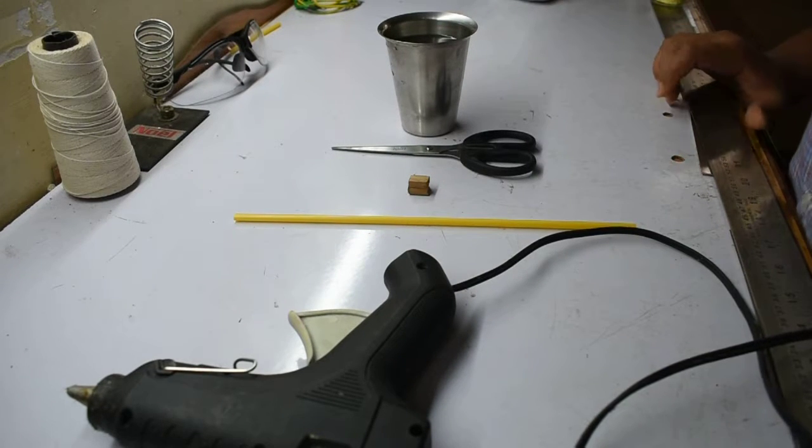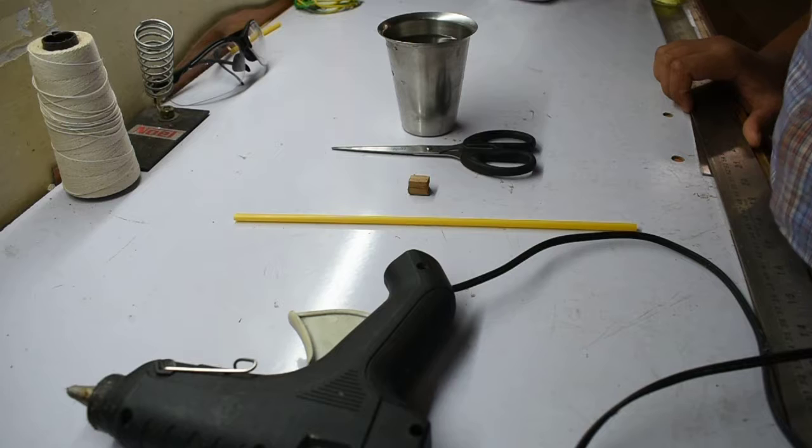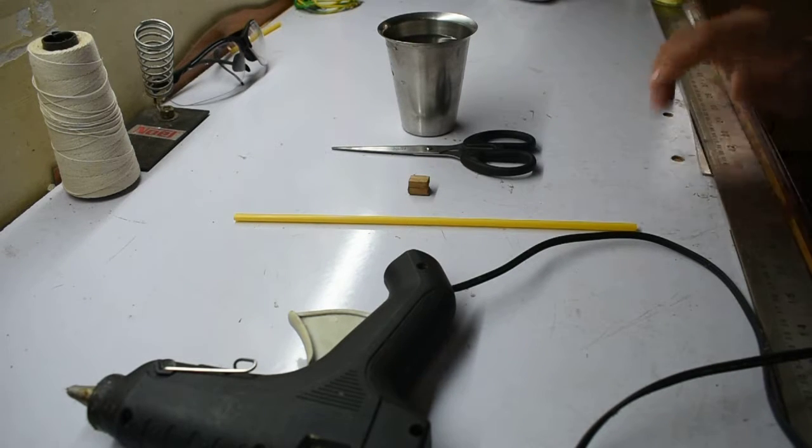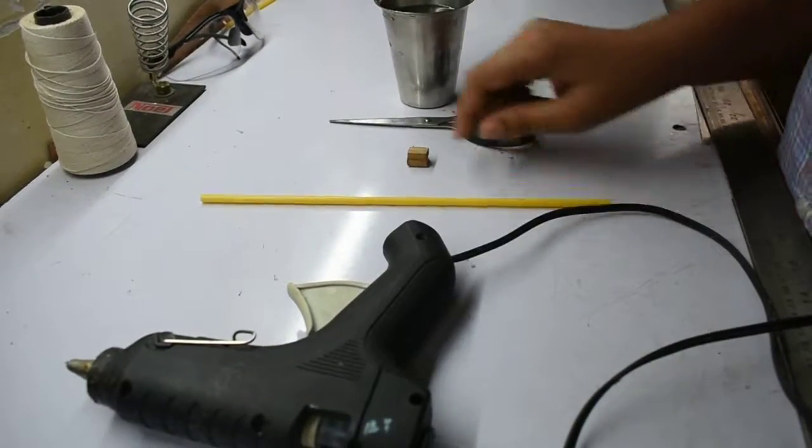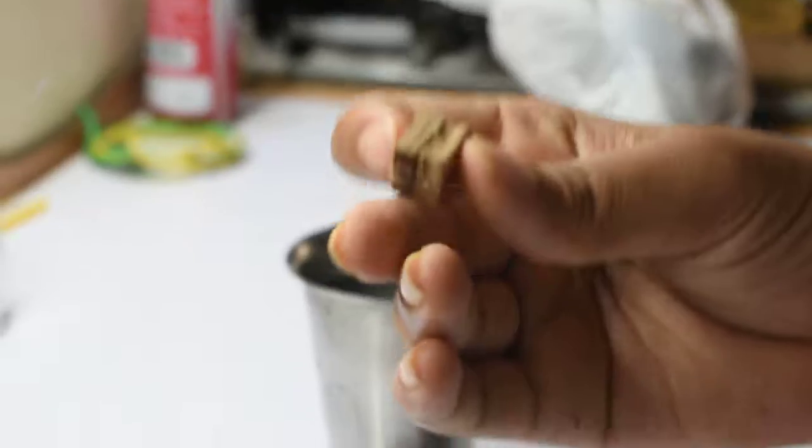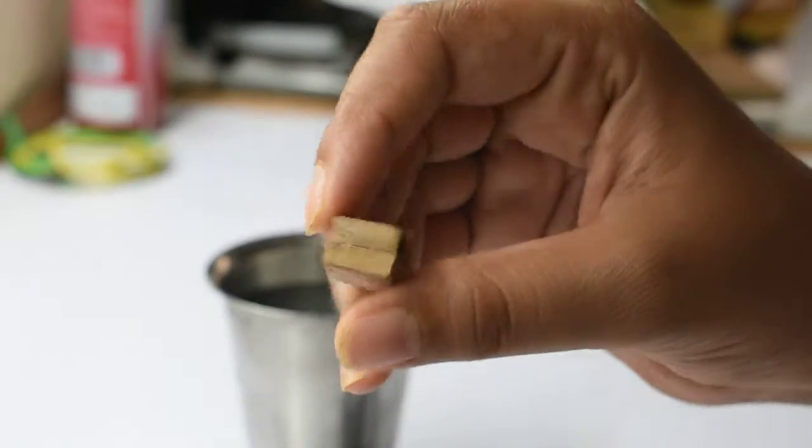Hello friends, in today's video we'll show you how to make a mini water sprinkler using straws. The requirements are: a glue gun, a straw, a small wooden block piece (you can even make this out of a straw), a pair of scissors, and a cup of water.